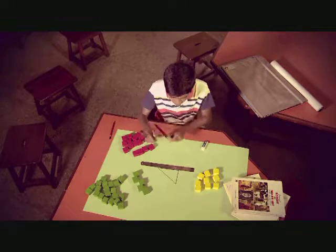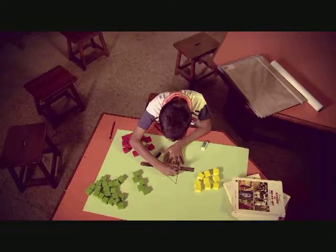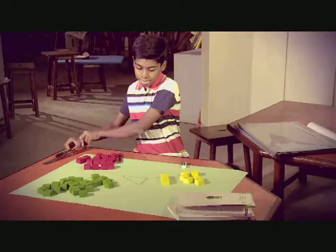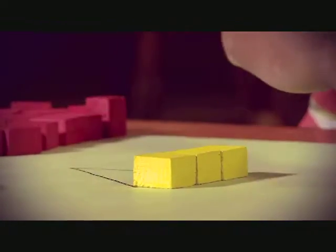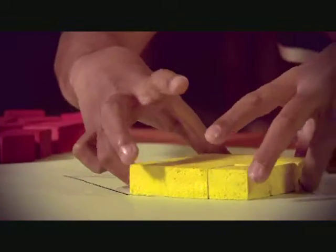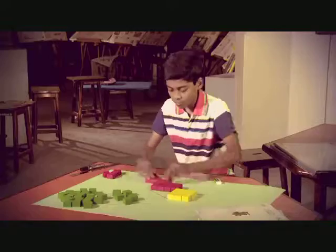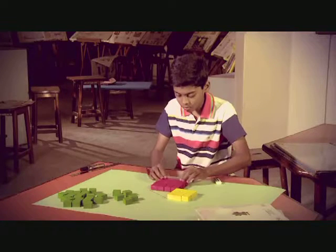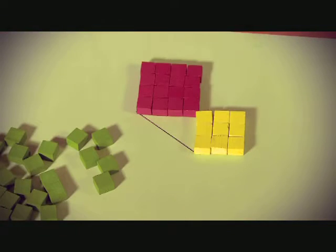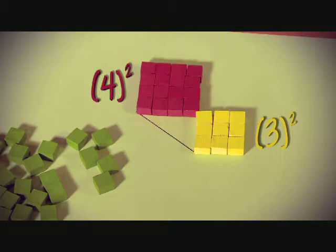John is attempting this with a bunch of colorful wooden blocks. First, he pulls out a sheet of paper and draws a right-angled triangle. Now on these two sides, he will create squares. One is three blocks long, and the other four blocks long. To make each of these squares, he is using nine and sixteen squares. We can also represent as three-square and four-square.